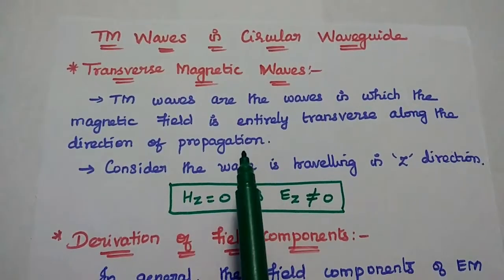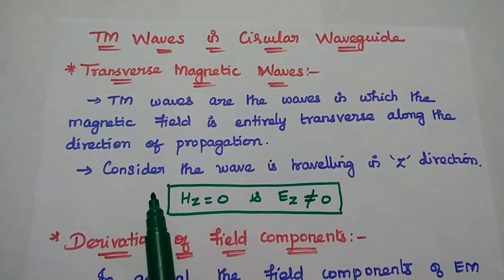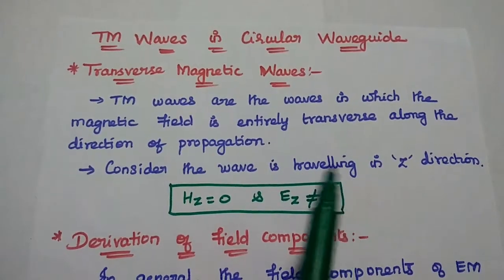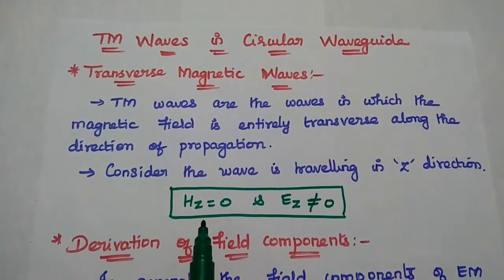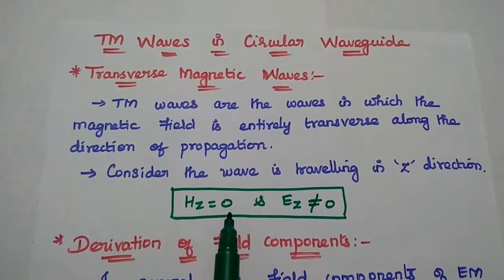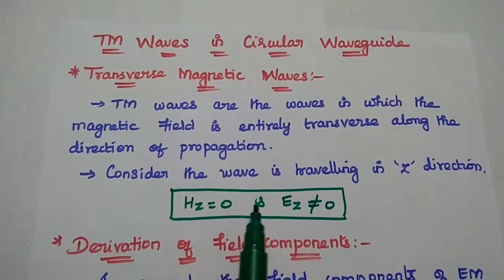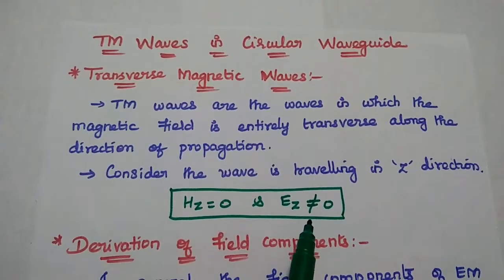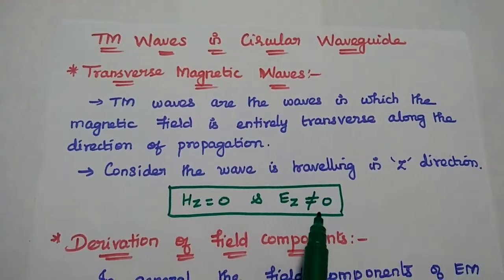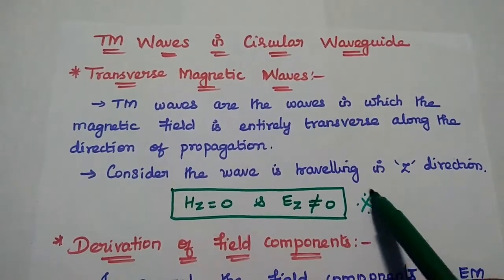Hence it is called transverse magnetic waves. If the wave is travelling in the Z direction, then the magnetic field in that direction is transverse — that means zero. But it has the electric field, that is EZ is not equal to zero. This is the condition for TEM waves.